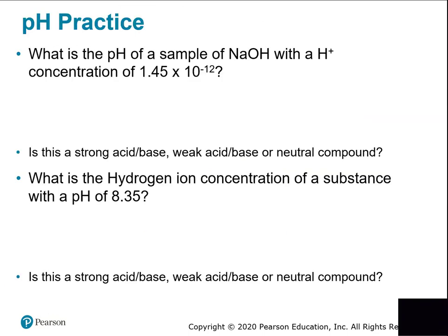The second topic is pH and how to calculate it. What is the pH of a sodium hydroxide sample if it has a hydrogen ion concentration of 1.45 × 10⁻¹⁰? If you know the concentration, pH equals negative the log of the acid concentration. It really just depends on what kind of calculator you have.